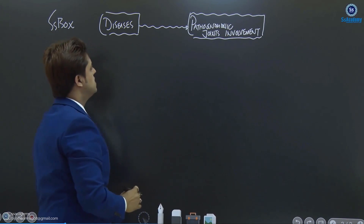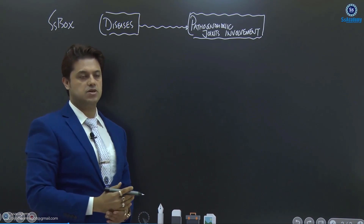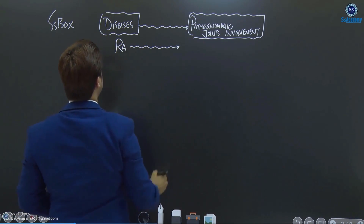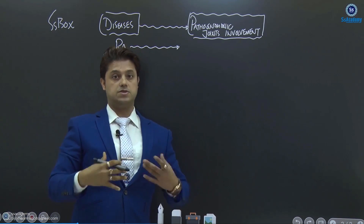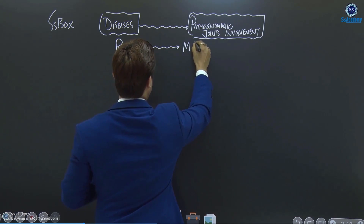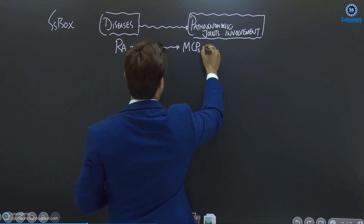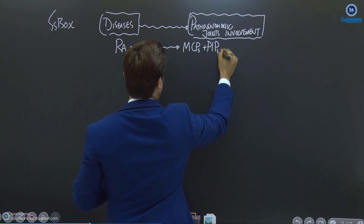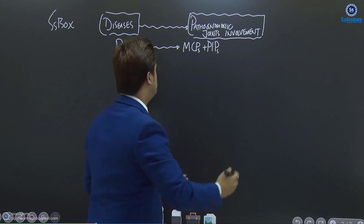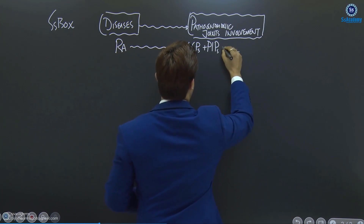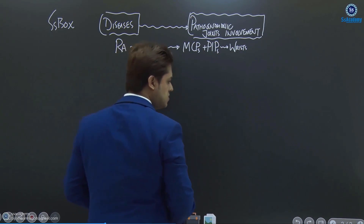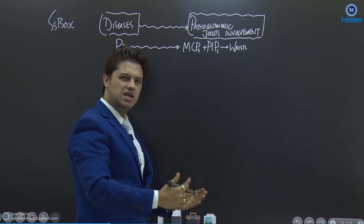Let me start with rheumatoid arthritis. In rheumatoid arthritis, we already learned about symmetrical polyarthritis of the small joints of the hands. Most typically the MCPs — metacarpophalangeal joints — and PIPs — proximal interphalangeal joints — but not the DIPs (distal interphalangeal joints). And later on, possibly the wrist joint. So the pathognomonic joint involvement is MCPs, PIPs, and the wrist.